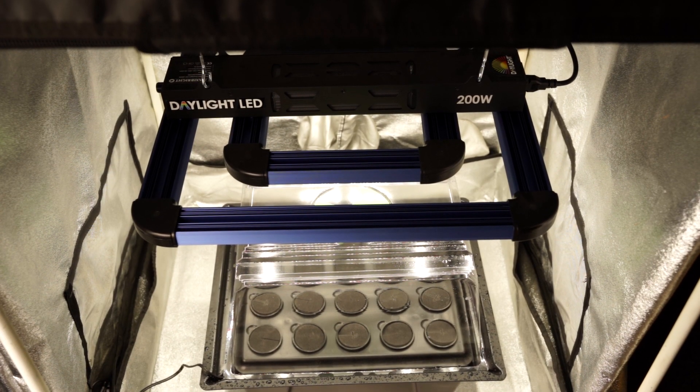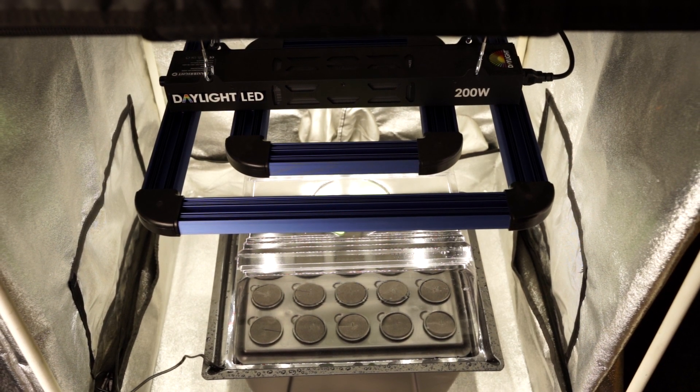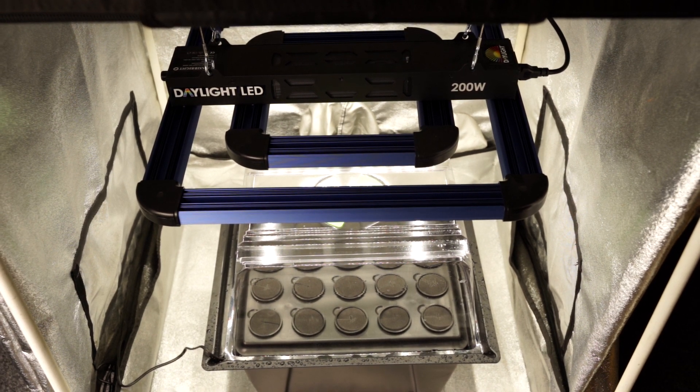The 200 watt daylight LED that you can see here is the best propagation and veg light that you can lay your hands on. Just make sure that you start off at the lowest setting as cuttings won't need much light to begin with.